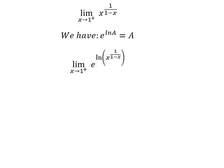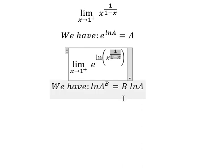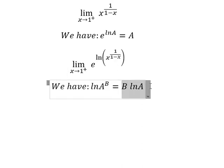Next, we have the second formula: ln A to the power of B equals B ln A. So capital B here is 1 over 1 minus x. We need to transform the expression using this formula.